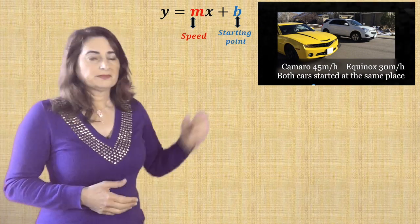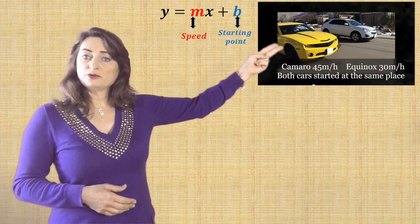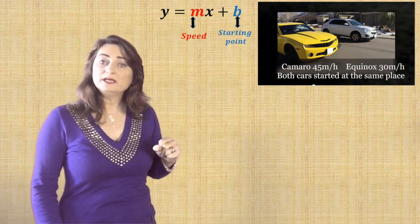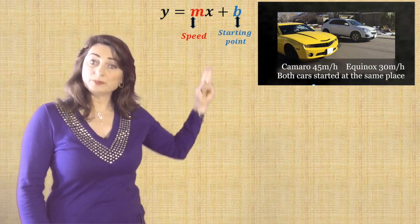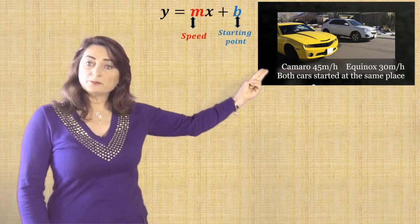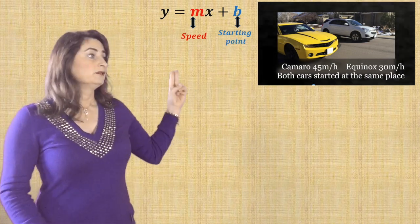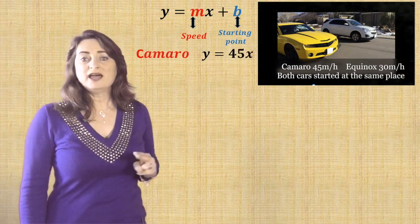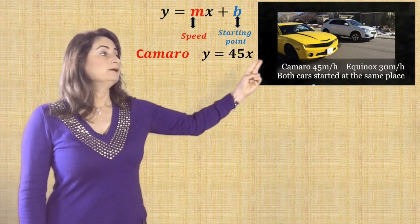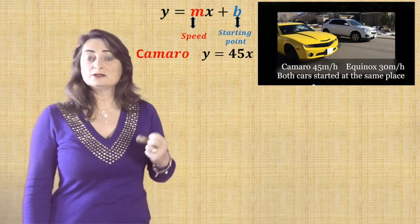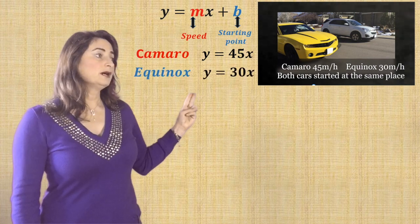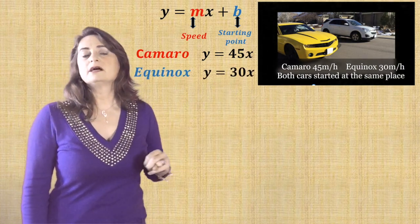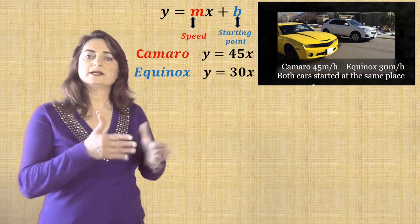Let's prove it mathematically. To write the equation for both cars, we need the slope-intercept form: y equals mx plus b, where m is the slope, or the rate of change, or the speed, and b is the starting point where both cars started. The Camaro's equation is y equals 45x, because the speed is 45 and the starting location is 0. The Equinox's equation is y equals 30x, because the speed is 30 miles per hour and the starting location is also 0.